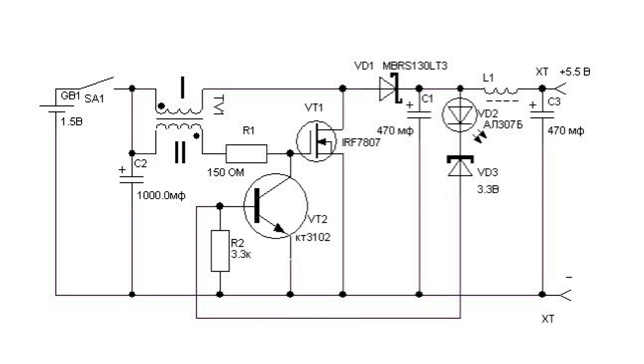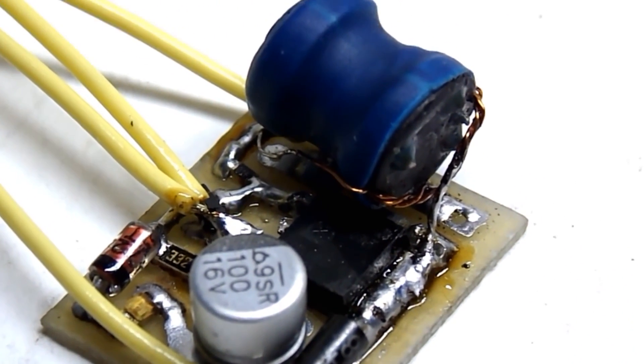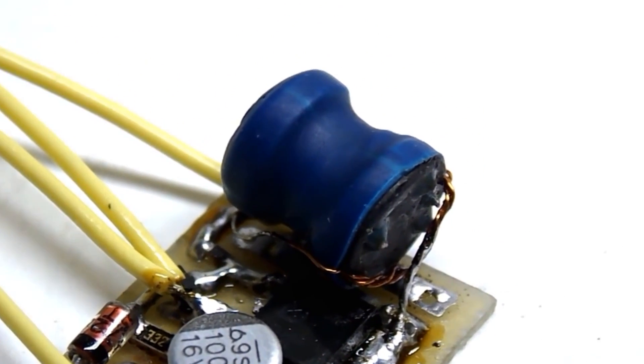Closing of the field-effect transistor causes surge of self-induction in the choke. These waves rectify with a diode and are smoothed by electrolytic capacitor. This self-induction electromotive force can be much higher than the supply voltage, depending on the coil.